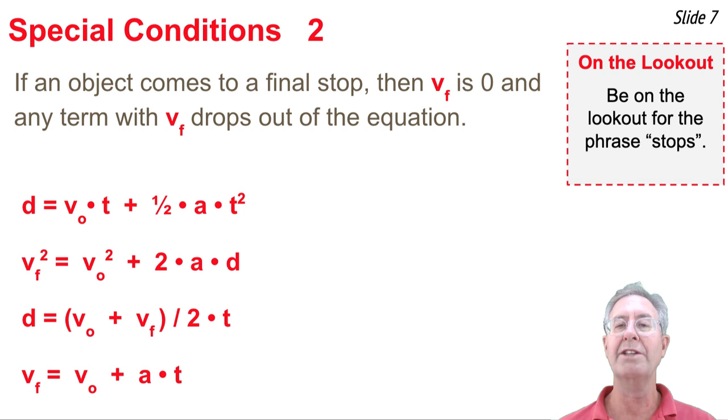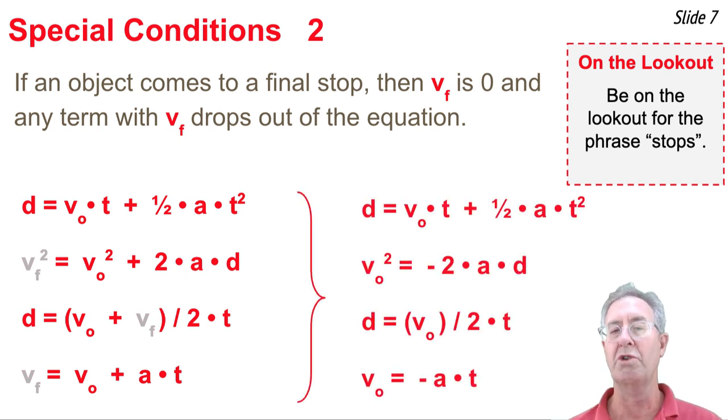A second set of conditions that you might come across is an object could come to rest or come to a stopping position. In situations such as this, the final velocity would be zero. And anywhere you see the final velocity in these equations, those terms would drop out. So the equations would change into these forms.